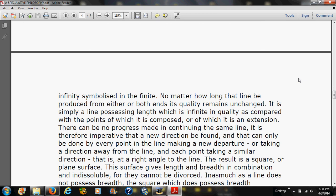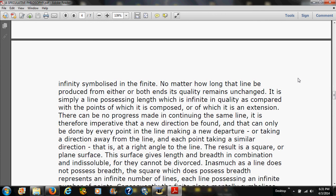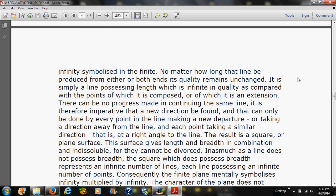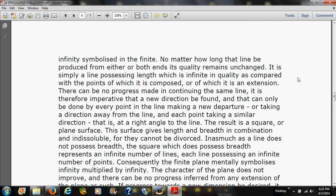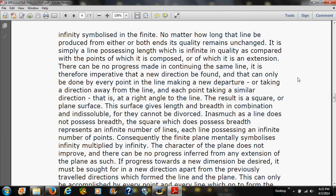There can be no progress made in continuing the same line. It is therefore imperative that a new direction be found, and that can only be done by every point in the line making a new departure, or taking a direction away from the line, and each point taking a similar direction, that is, at a right angle to the line. The result is a square or plane surface. This surface gives length and breadth in combination, and is indissoluble. They cannot be divorced. Inasmuch as a line does not possess breadth, the square which does possess breadth represents an infinite number of lines, each line possessing an infinite number of points. Consequently, the finite plane mentally symbolizes infinity multiplied by infinity.